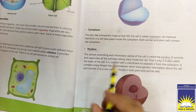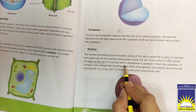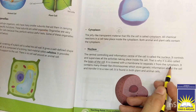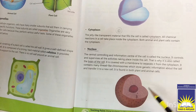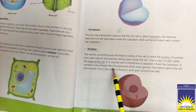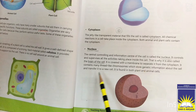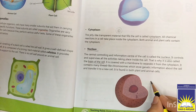What is the brain of the cell? It is the nucleus. The nucleus is covered with a membrane to separate it from the cytoplasm. It contains many thread-like chromosomes which store genetic information about the cell and transfer it to new cells.